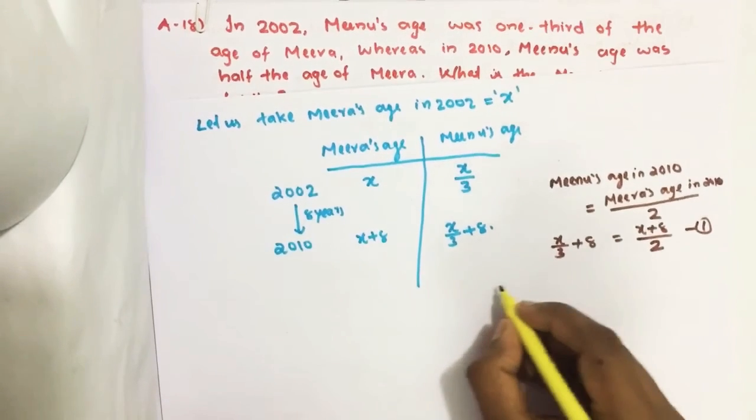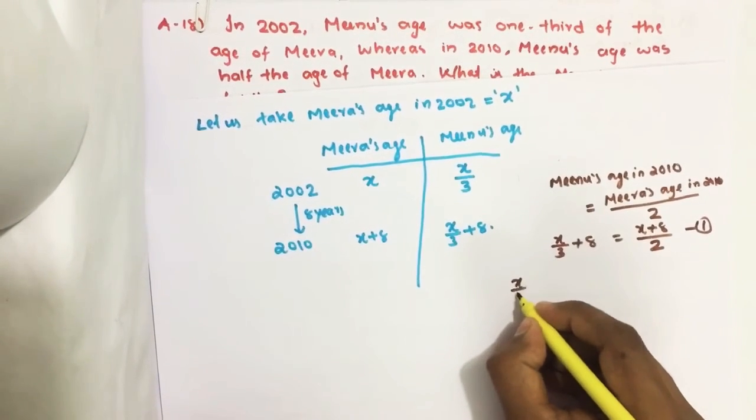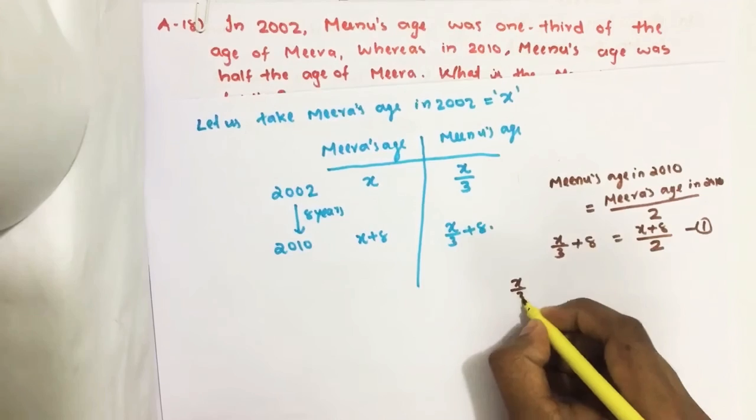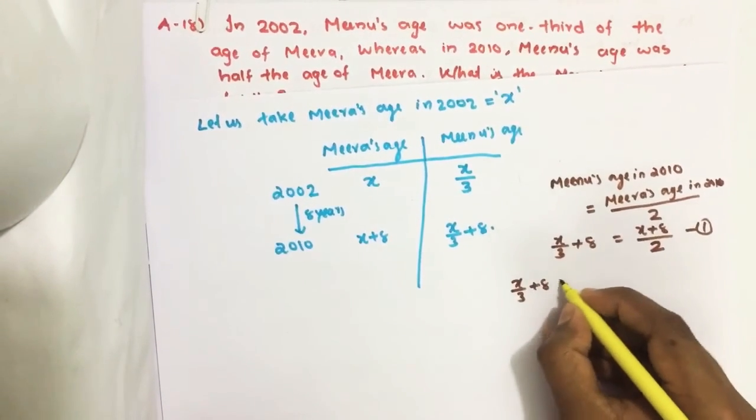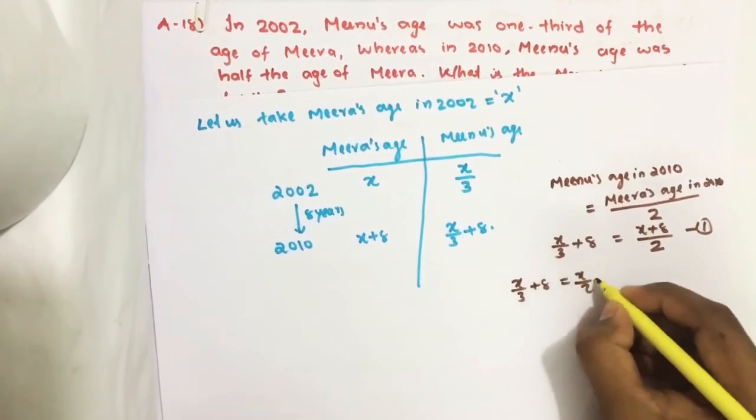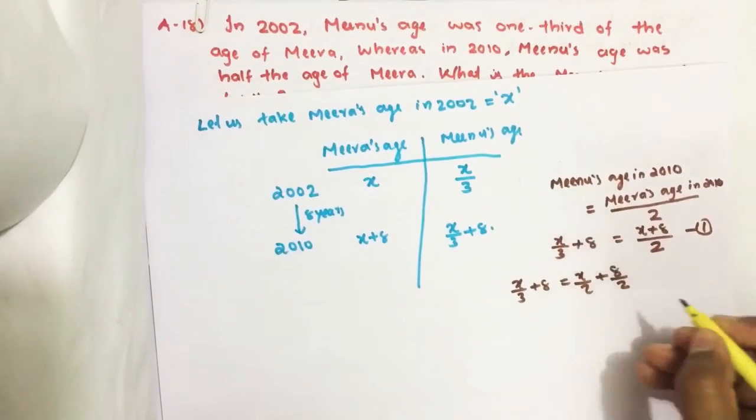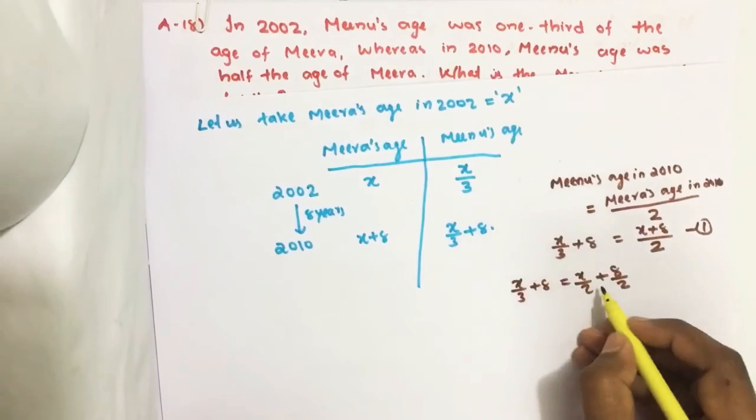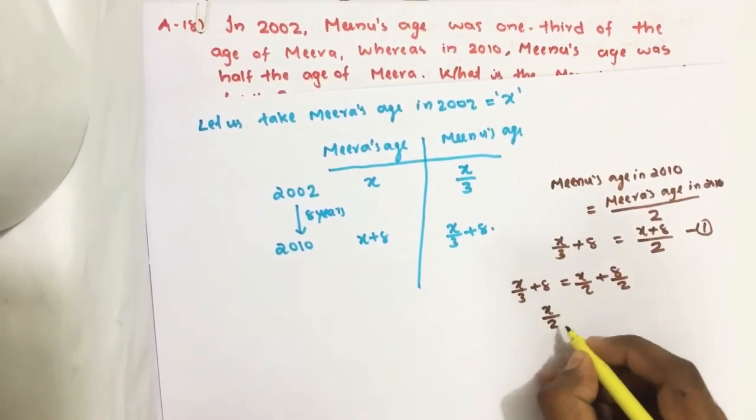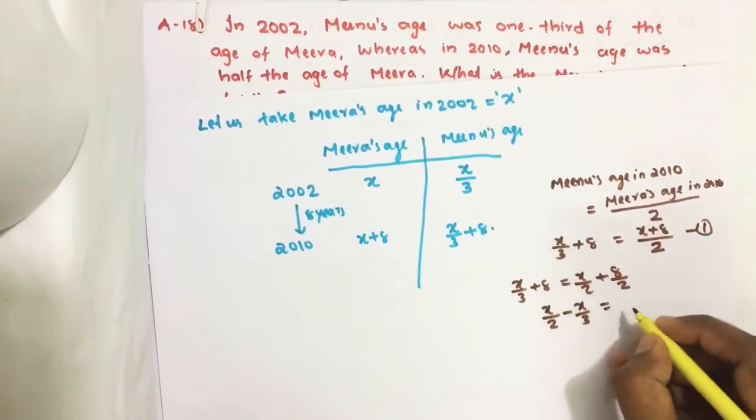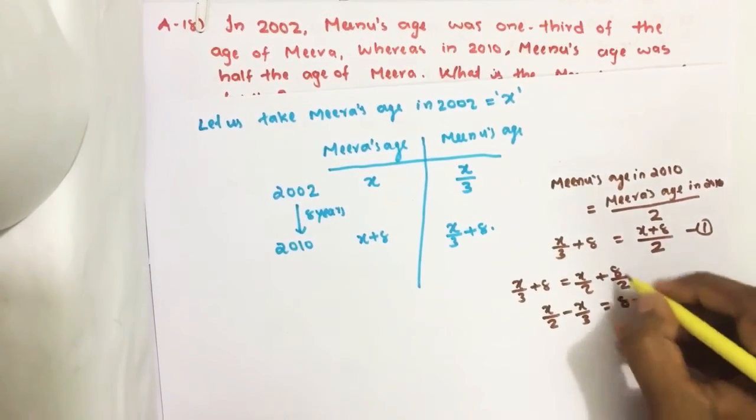We get X by 3 plus 8 equals X by 2 plus 8 by 2. Take all X terms on one side: X by 2 minus X by 3 equals 8 minus 8 by 2, equals 4.